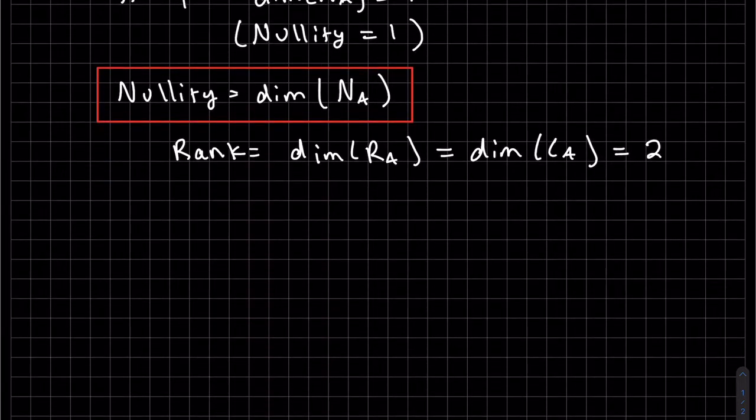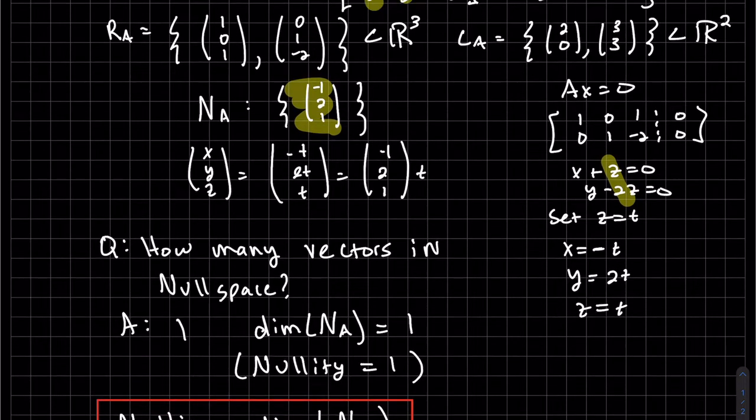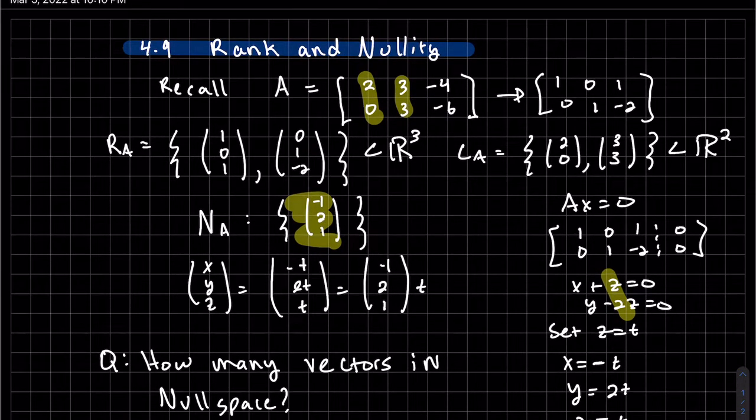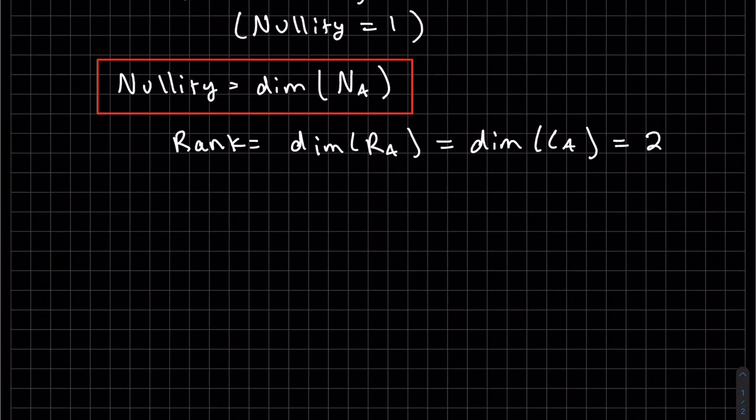And remember, they're equal because the way we build them is we use our pivots. And those are the two rows that have our pivots. And those are the two columns that have our pivots corresponding, of course. So they have to be the same.